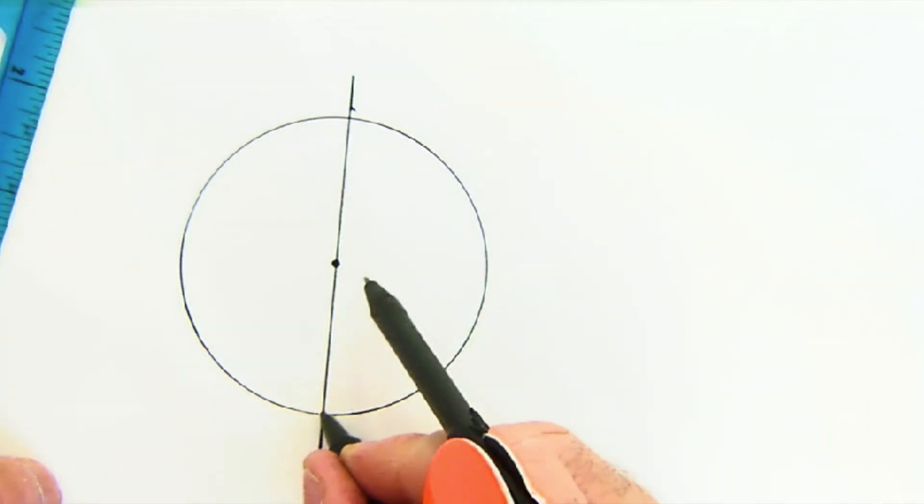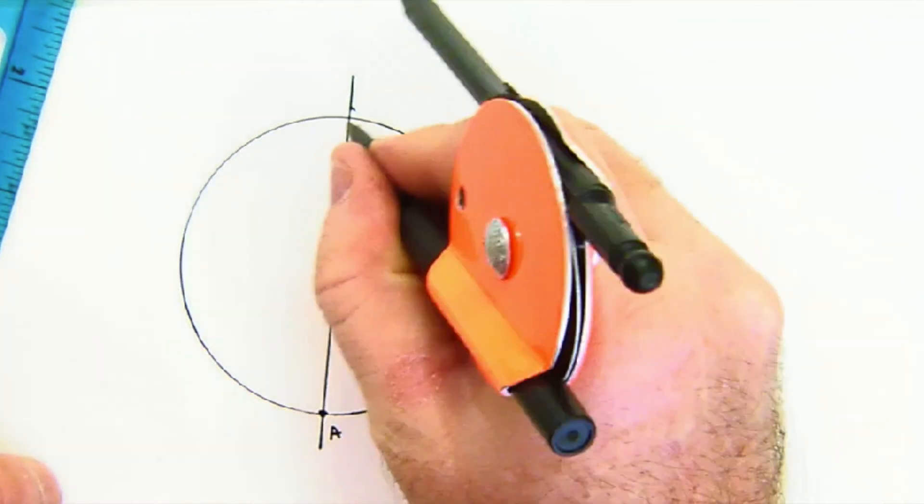So I create the diameter for sake of ease. We'll call this A and we'll call this B.